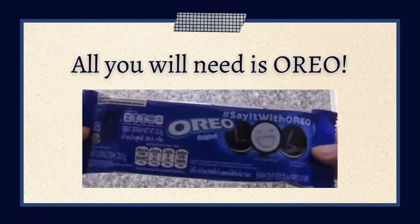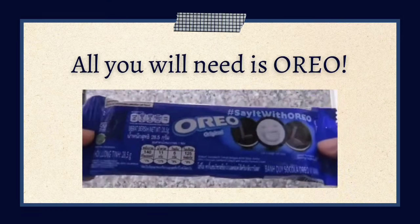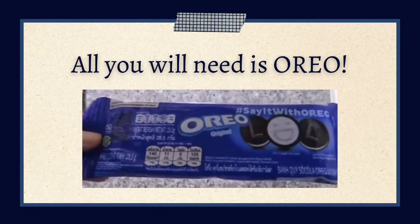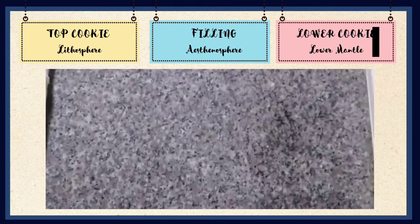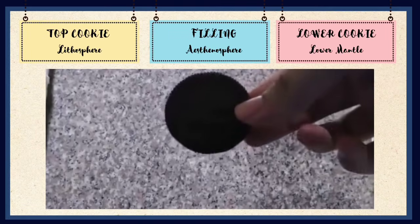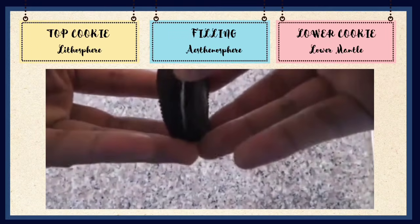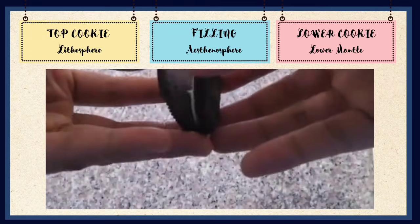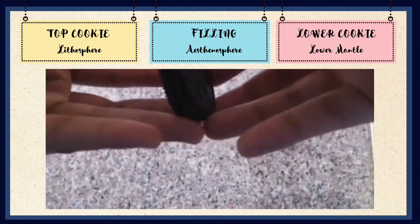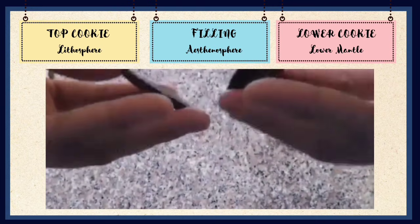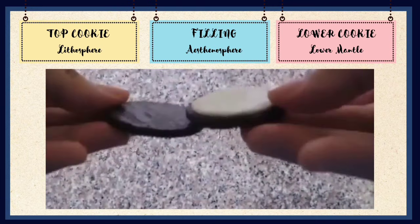All you will need is an Oreo. The top cookie will be the lithosphere, the filling will be the asthenosphere, and the lower cookie is the lower mantle.